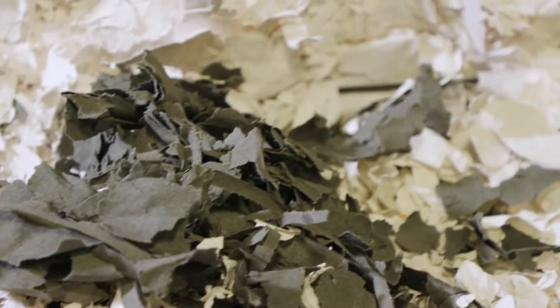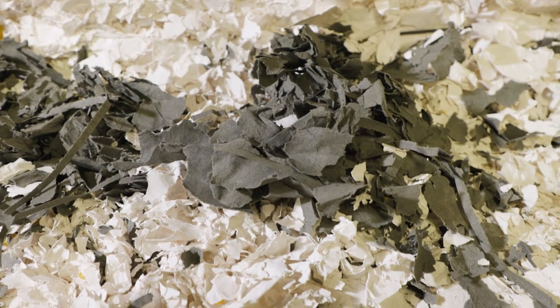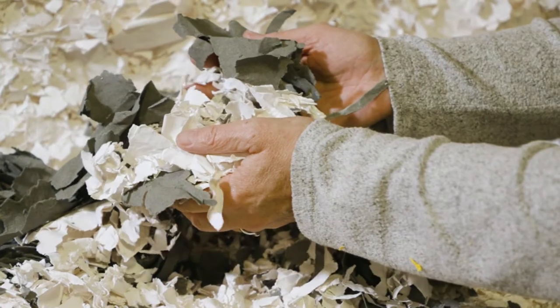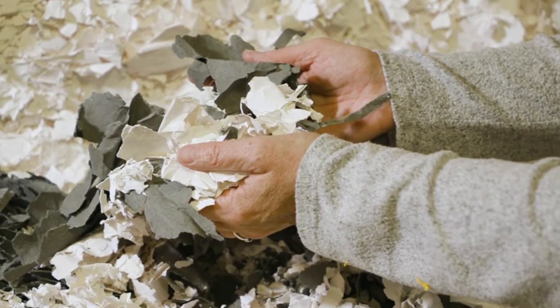To infuse Terrazzo's one-of-a-kind look into horizontal and vertical surfaces, Formica Group has created an award-winning high-pressure laminate made from bits of post-production paper waste.